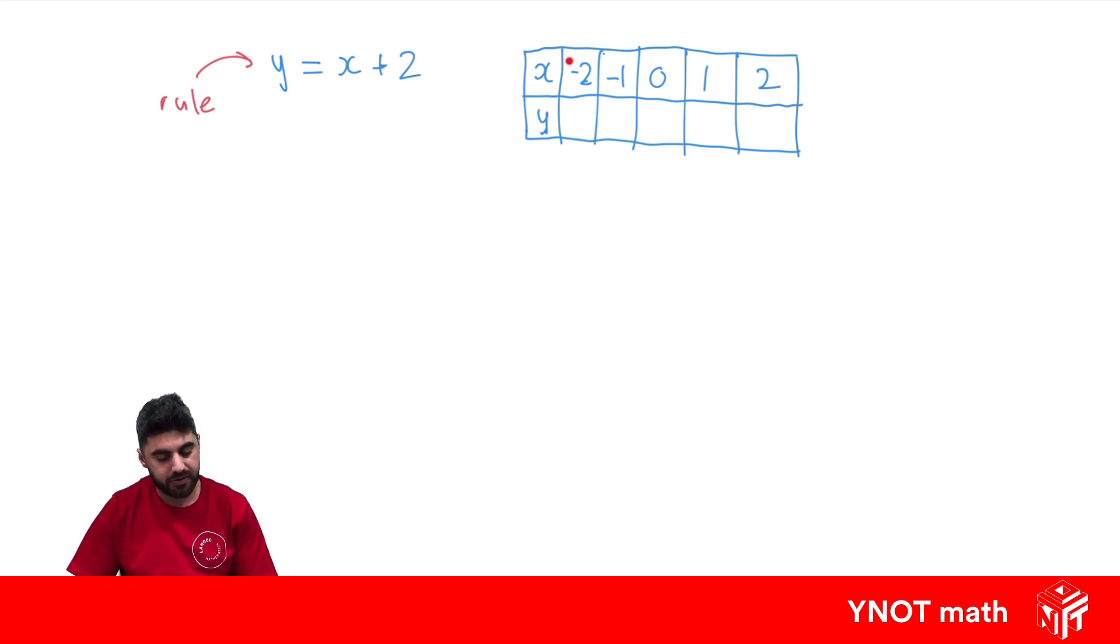So this is saying if x equals minus 2, what's the value for y? Let's write them out. So if we know that y equals x plus 2, if x is minus 2 we're going to have minus 2 plus 2. Minus 2 plus 2 is 0. So that's our value here.